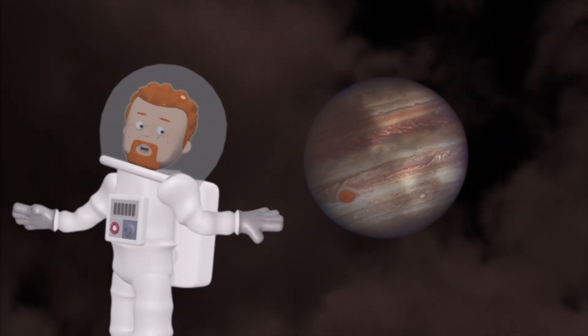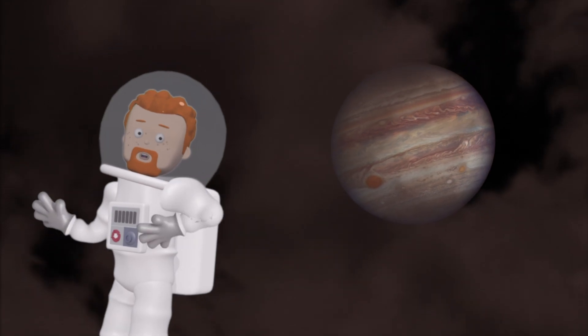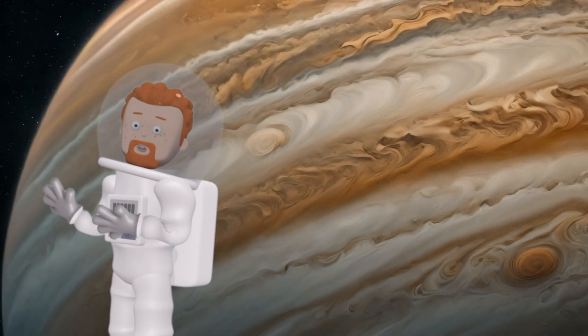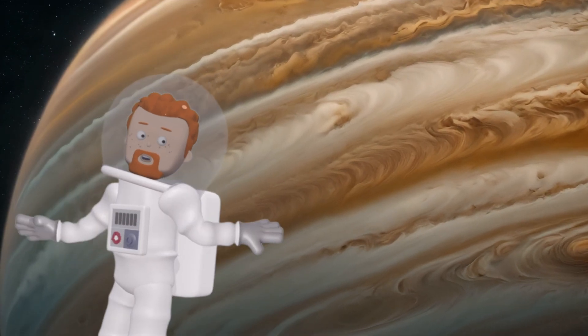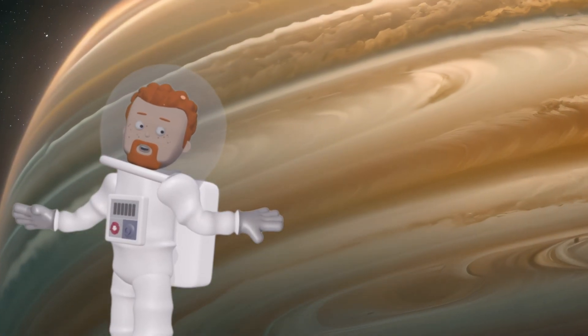Jupiter is a gas giant with a giant storm called the Great Red Spot. Let's check it out. Wow, look at that massive storm. The Great Red Spot is a giant storm that has been raging for over 300 years.